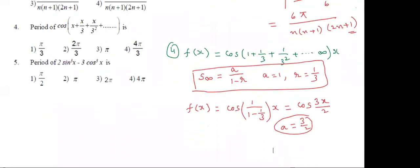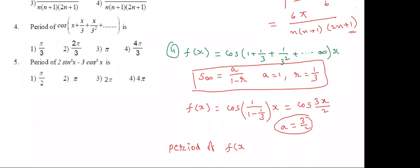The period of cos(Ax) is 2π by mod A. So the period of F(x) is 2π by mod(3/2) — the denominator 2 goes to the numerator — giving a final answer of 4π by 3. Students, which option is correct? The fourth option.